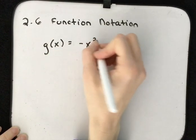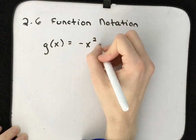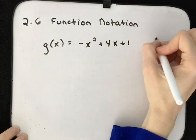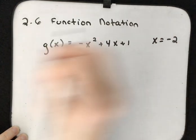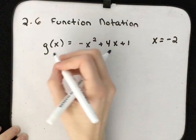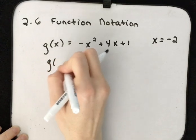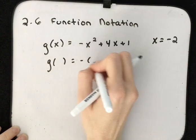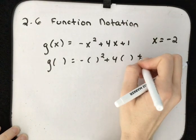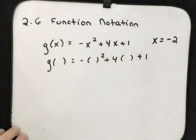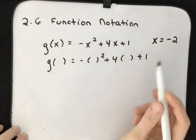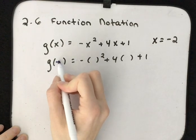Let's try again. This time we have function g of x, which equals negative x squared plus 4x plus 1. We want to evaluate this when x is negative 2. That means we rewrite our function, but every time we see an x we leave a parenthesis, and in that parenthesis we put negative 2.